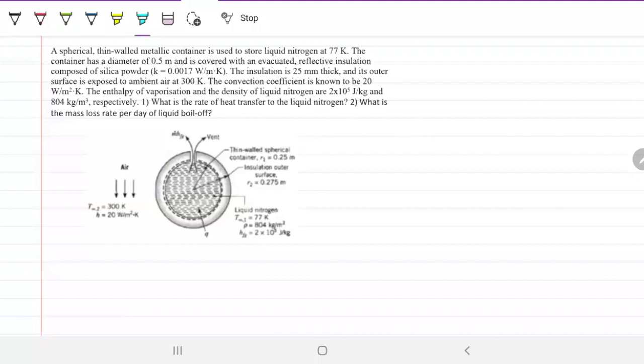The insulation is 25 millimeters thick, and its outer surface is exposed to ambient air at 300 Kelvin. Convection coefficient is known to be 20. Note that this convective coefficient showed up again - that's the H we just talked about on the previous problem. The enthalpy of vaporization and the density of liquid nitrogen is 2 to the fifth joules per Kelvin and 804. What is the rate of heat transferred to the liquid nitrogen, and what is the mass loss rate per day of liquid boil off?